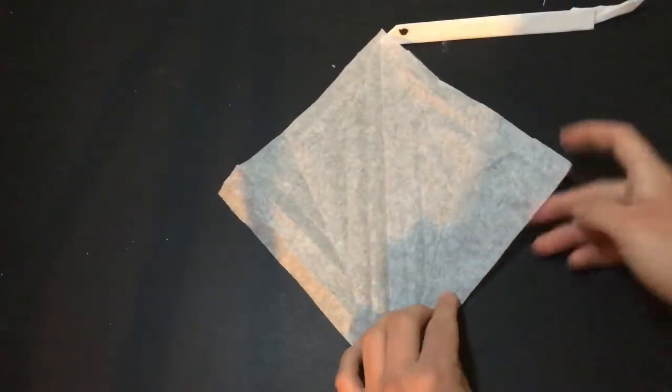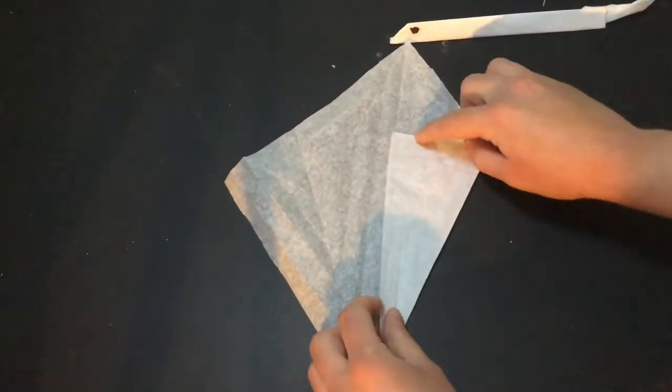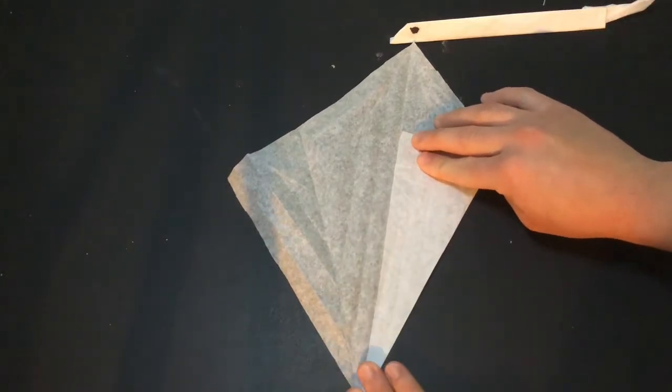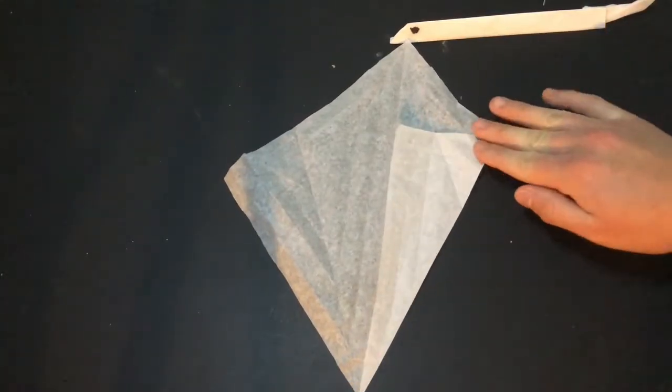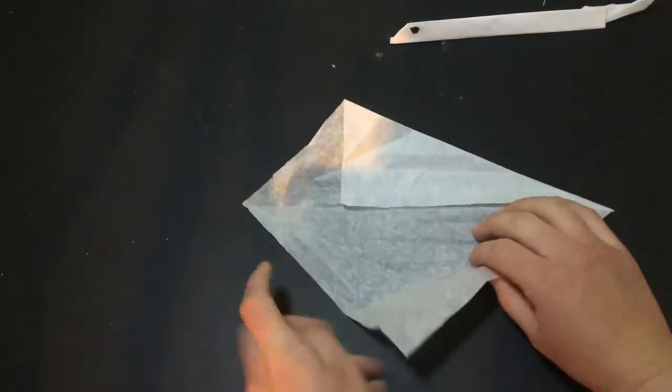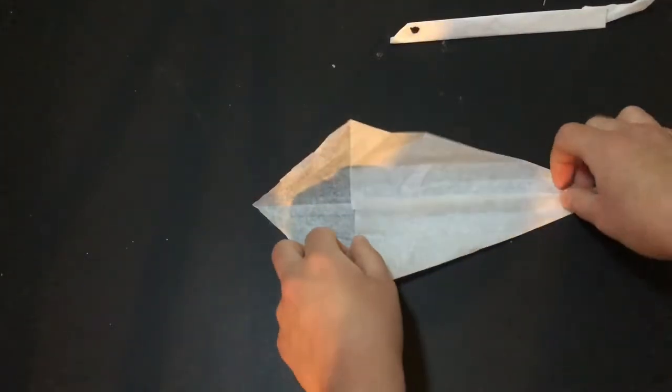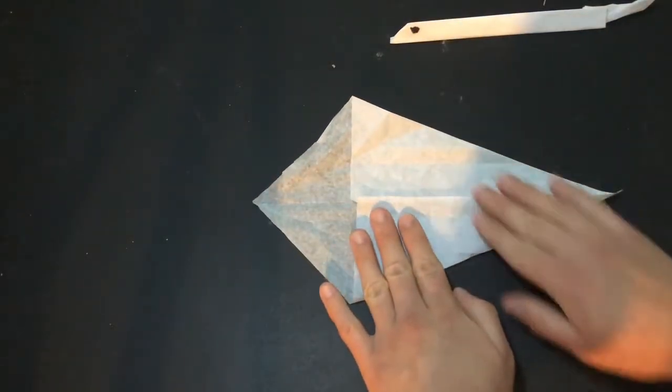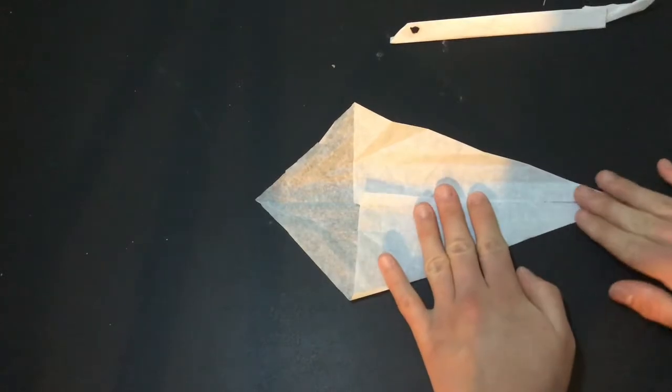Now we're gonna open it up and we're gonna take the two corners and fold it inward so that that outer edge is now lined up with the center. So we're gonna do that on both sides and make sure it's as lined up as possible.